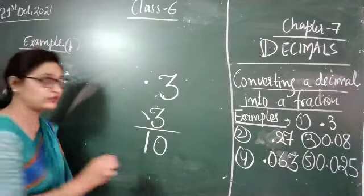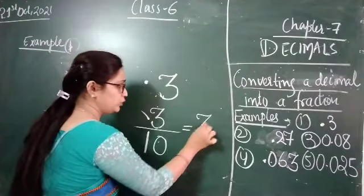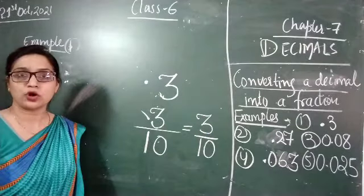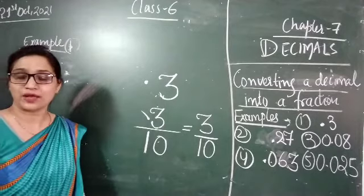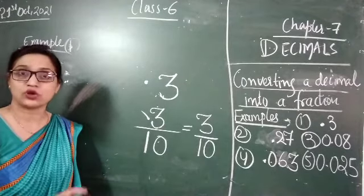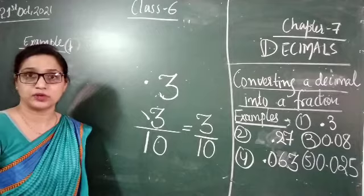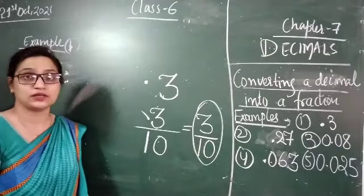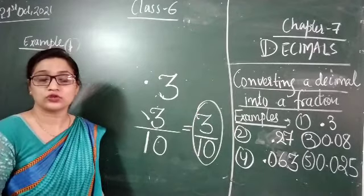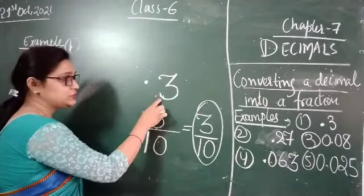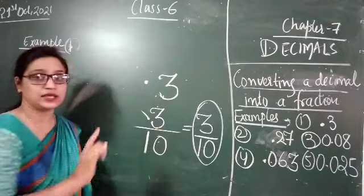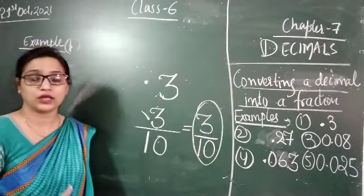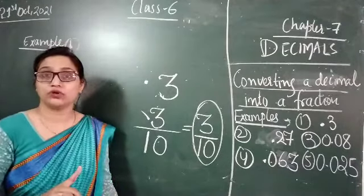So the fraction we are getting is equal to 3 upon 10. We cannot divide by a common number, so 3 upon 10 is already in its simplest form. So the answer is 3 upon 10, that is a fraction. We have converted 0.3, that is a decimal, into a fraction: 3 upon 10.